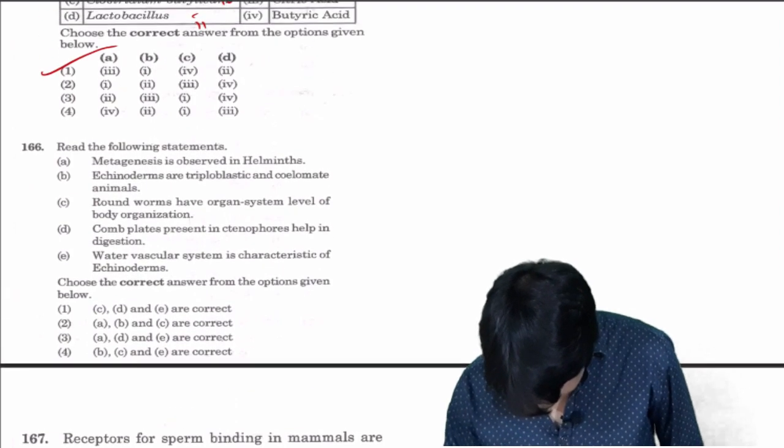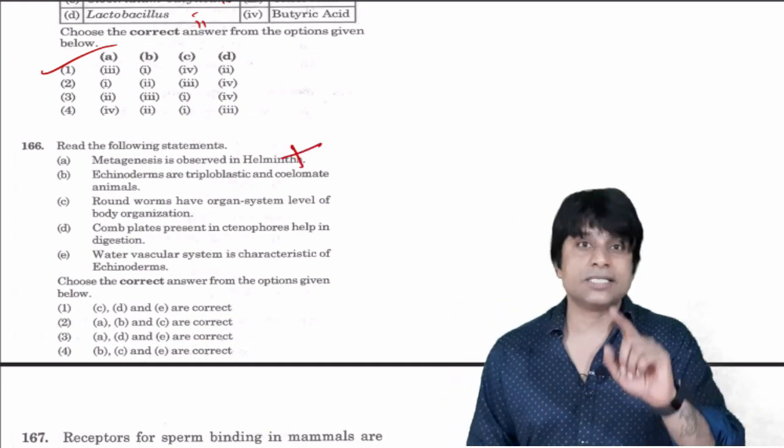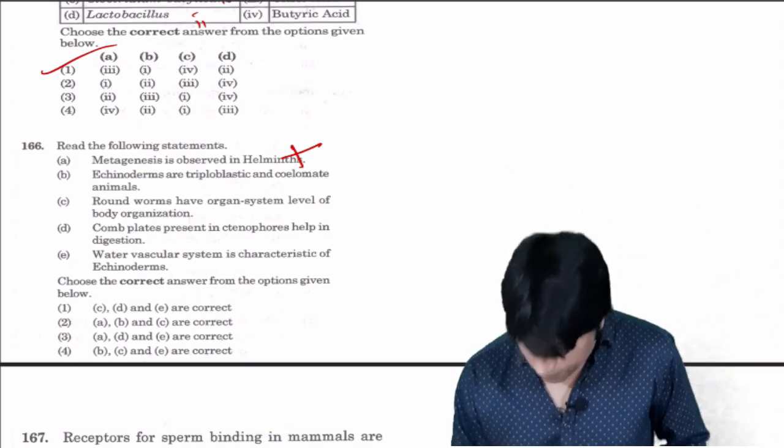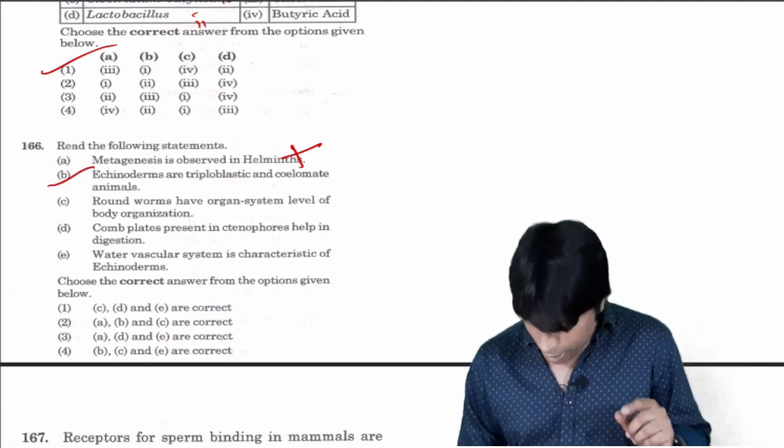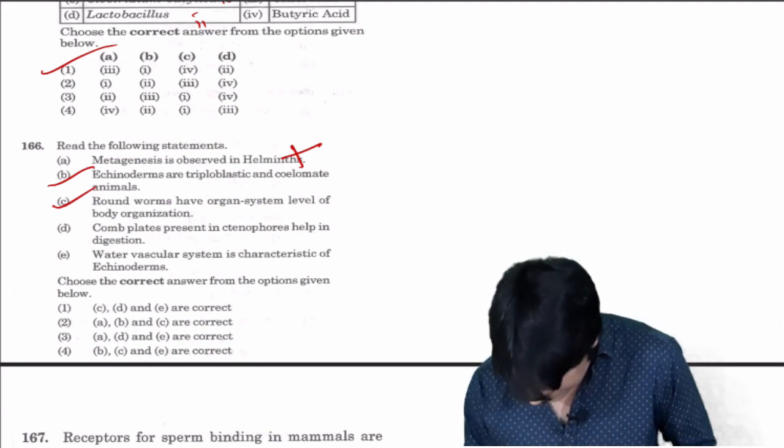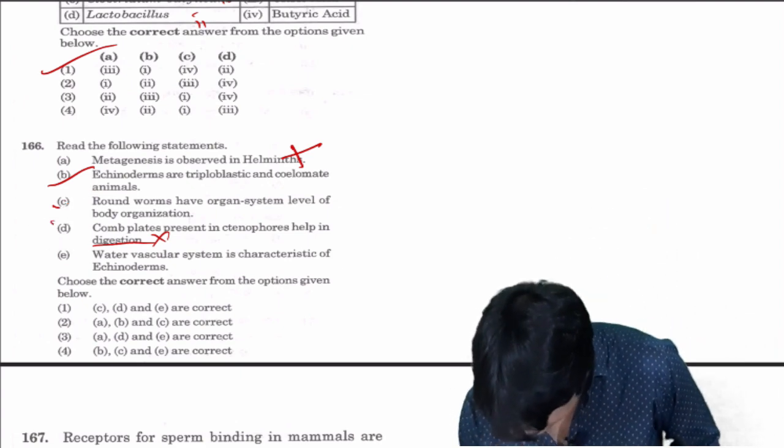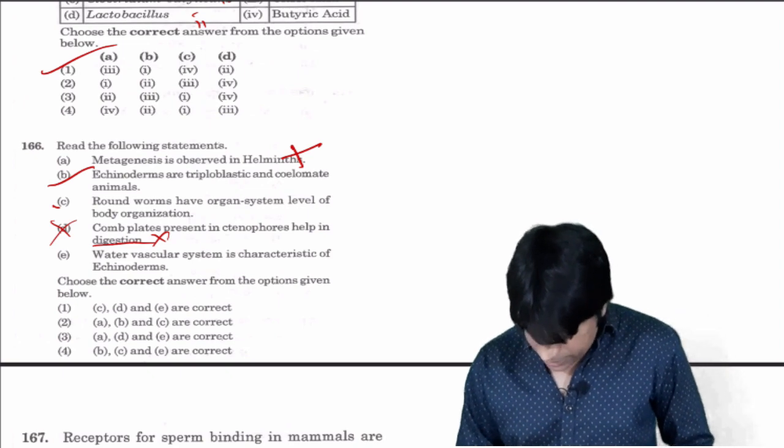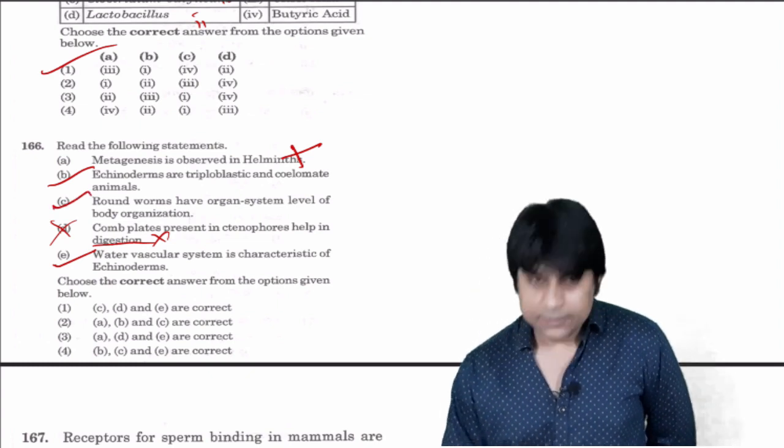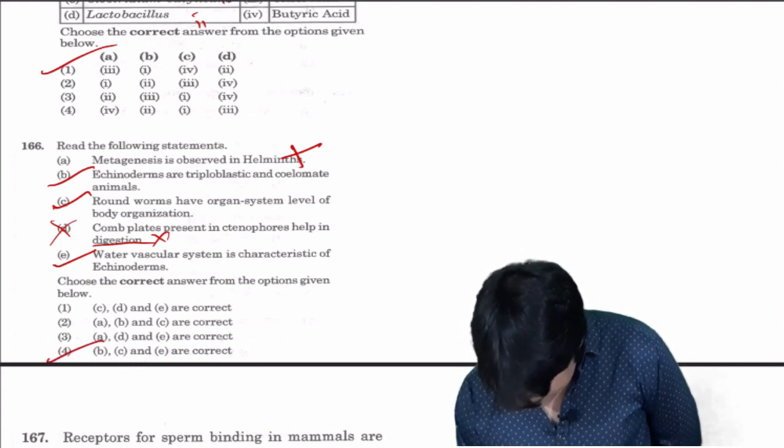Read the following statements: Metagenesis is observed in helminths - this is wrong, metagenesis cannot be seen in helminth, it's a character of cnidarians, alternation of generations. Echinoderms are triploblastic and coelomate, correct answer. Roundworms have organ system level of body organization, this is also correct. Comb plates are present in ctenophores, correct. Helps in digestion is wrong, comb plates are for locomotion.